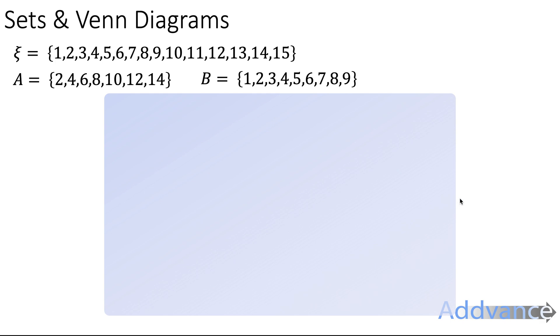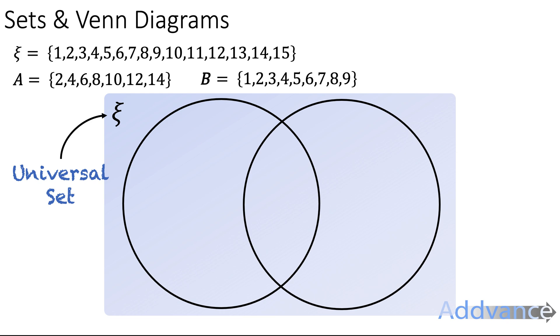We're going to start by drawing a Venn diagram. The first thing we do is draw a universal set, which we normally draw as a big rectangle here, and we label that rectangle with this squiggly E symbol. Then, because we've got two sets inside the universal set, we draw two circles to represent those. If an element is in both sets, we write it where the two circles cross over. If the set element is only in one of the sets, we just write it in the separate part of the circle. And if an element is in neither set, we write it on the outside of both circles inside the universal set.